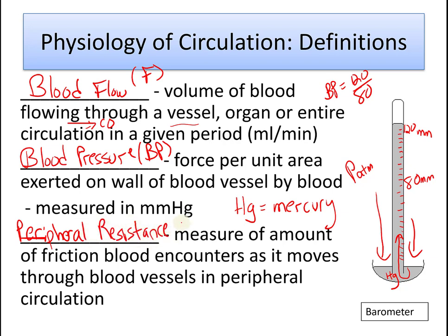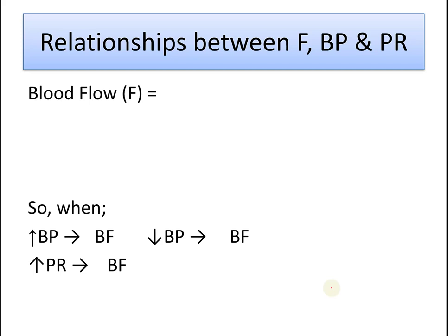Peripheral resistance is the amount of friction that blood encounters as it moves through blood vessels in the peripheral circulation. Peripheral means outside of the heart. The inside of the blood vessel — the tunica intima — is fairly slick, but there is some friction, and the longer blood travels through the blood vessels, the more friction it encounters.